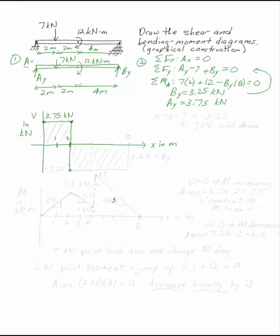So if you started at 3.75, you're going to end up at minus 3.25, because 3.75 minus seven is minus 3.25. So this is the drop that comes from your seven kilonewton load down.